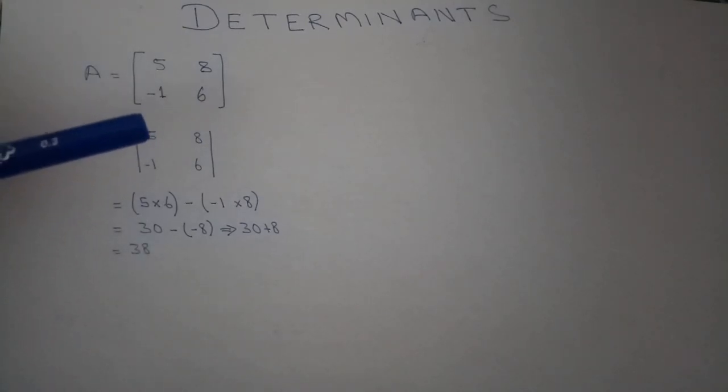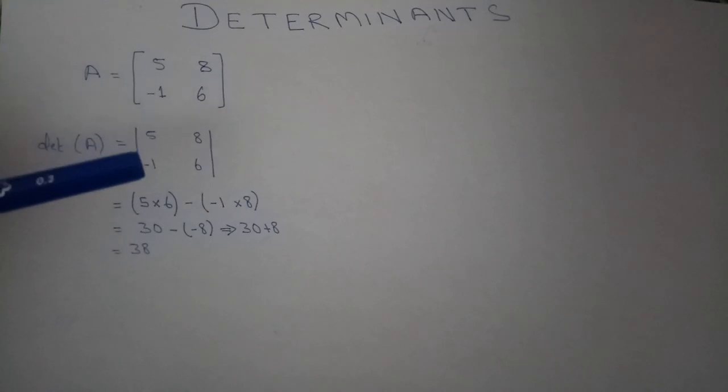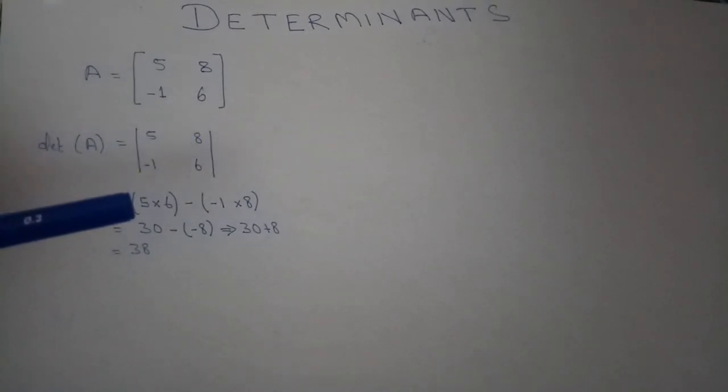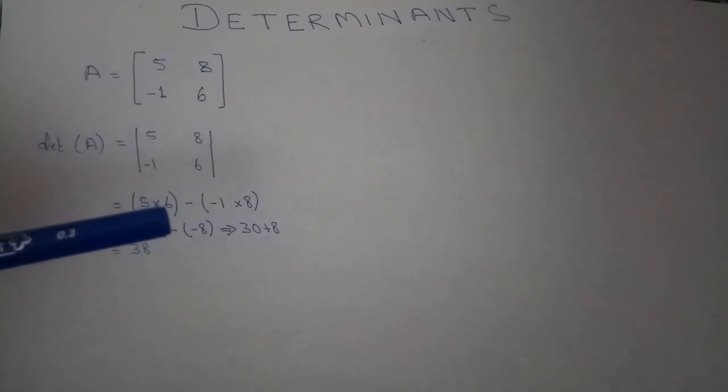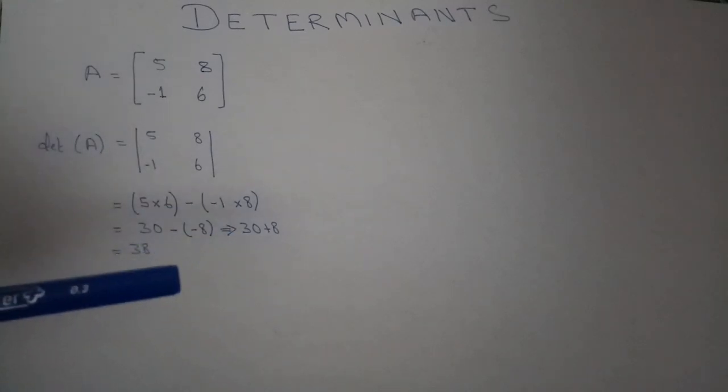We will multiply 5 by 6 and 8 by minus 1. You can see 5 multiply by 6 and then minus 1 multiply by 8. The resultant will be 30 minus, that is minus 1 multiply by 8, minus 8. So 30 minus minus 8 is plus 8. 30 plus 8 will be 38.